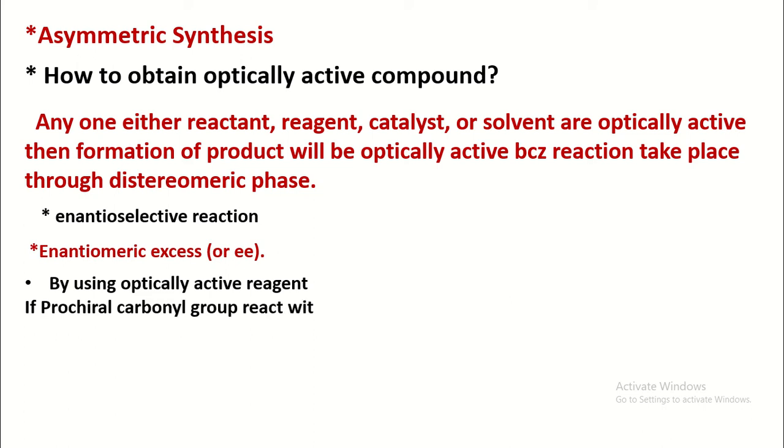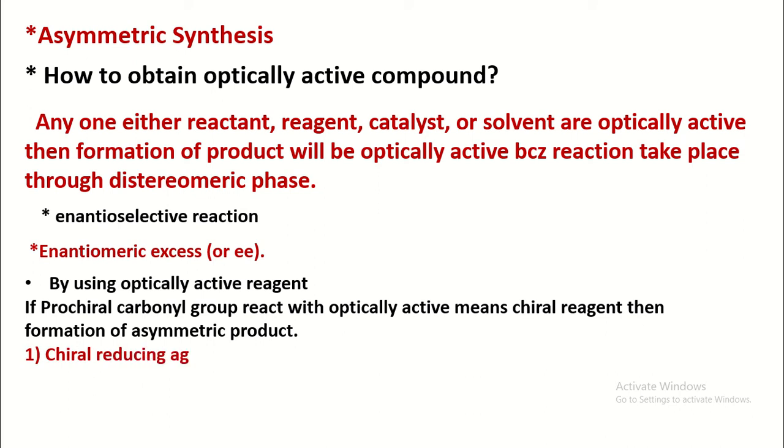In the last lecture, we also focused on the formation of optically active compounds by using optically active reagent. If prochiral carbonyl, means the carbonyl attached to two different groups, reacts with optically active means chiral reagent, then formation of asymmetric product.